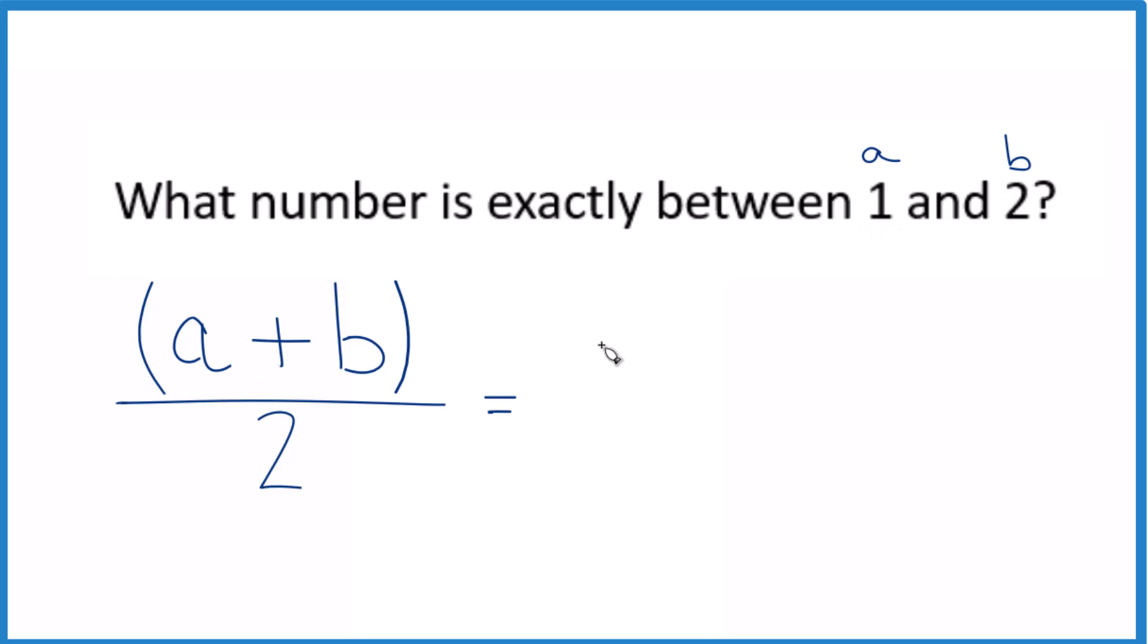So we have 1 plus 2 over 2. That's 1 plus 2 is 3 over 2. So the number that's exactly halfway between 1 and 2, that's 3 over 2.